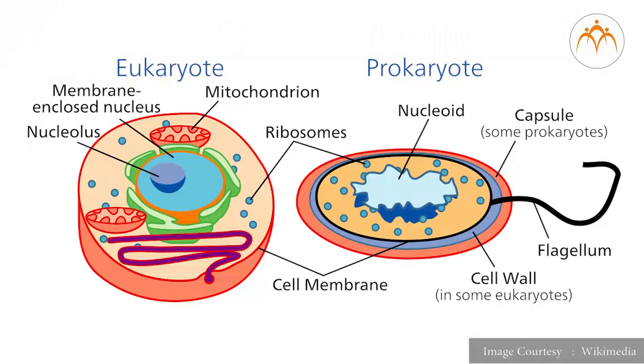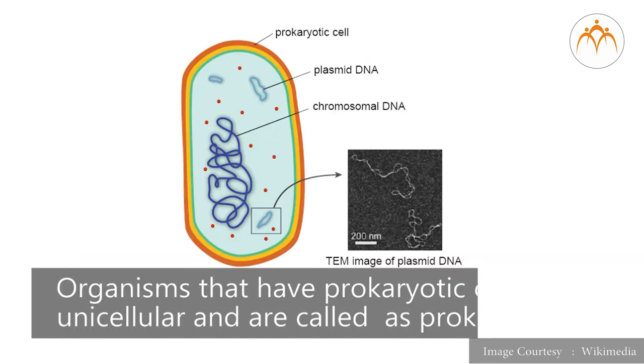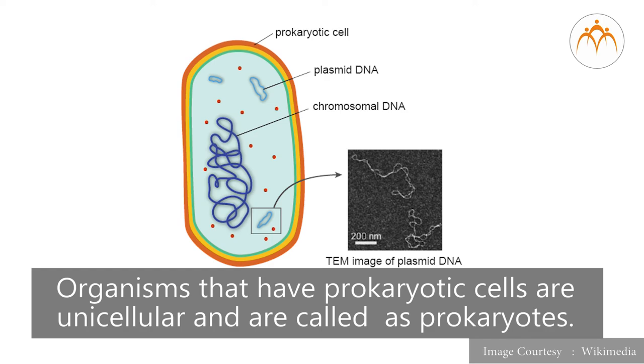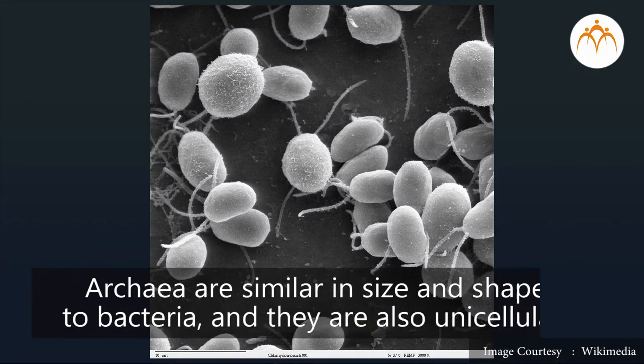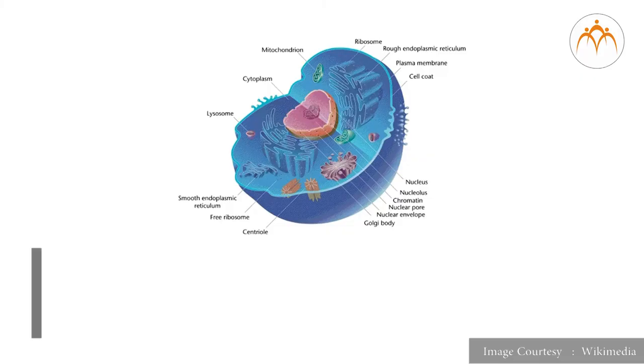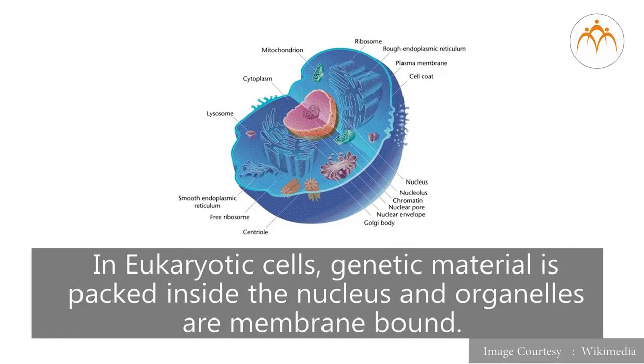Summary: There are mainly two types of cells: prokaryotic cells and eukaryotic cells. Organisms that have prokaryotic cells are unicellular and are called prokaryotes. All the microbes are not harmful but many of them are useful for human beings. Another example of prokaryotes is Archaea. Archaea are similar in size and shape to bacteria and they are also unicellular. In eukaryotic cells, genetic material is packed inside the nucleus and organelles are membrane bound.